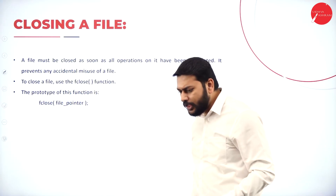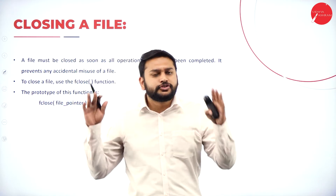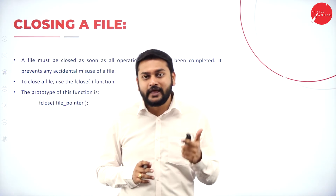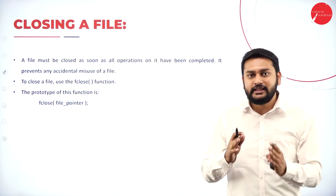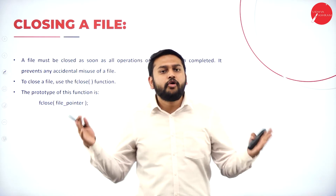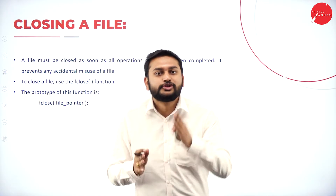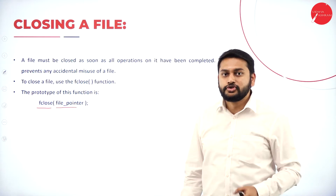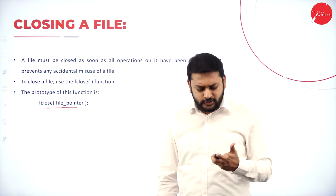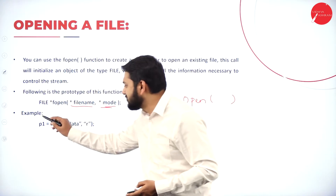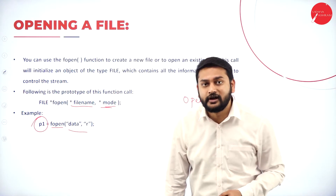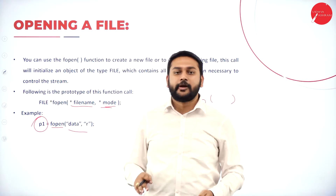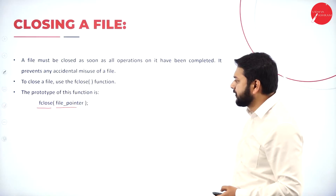When you have performed all operations on a file, make sure you close it. It is mandatory to close the file before exiting. To close the file I use the function fclose and pass the file pointer. This file pointer — for example p1 — points to your file location in memory.